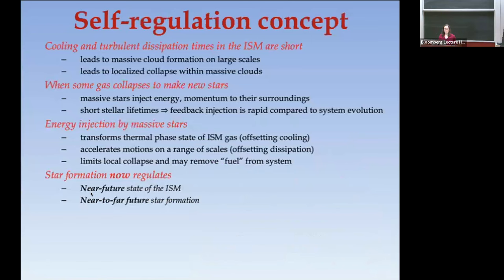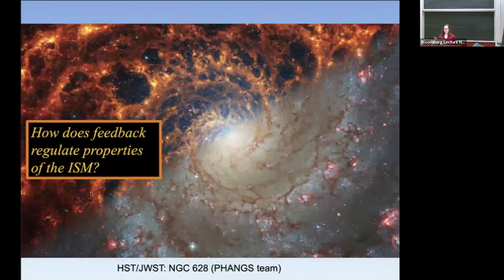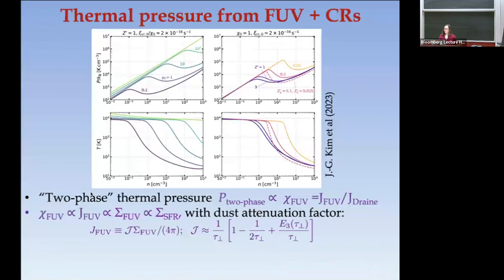Coming back to self-regulation: the feedback requirements to maintain equilibrium in the ISM can actually be used to predict the star formation rate. The characteristic pressure varies essentially linearly with the radiation field. This matters because the pressure always has to be somewhere where you can have a cold ISM. This characteristic pressure is proportional to the radiation field strength, and you can estimate this with a slab model where the density and source function are uniform.